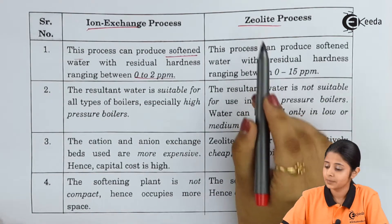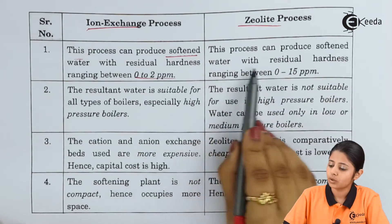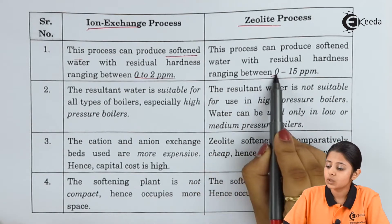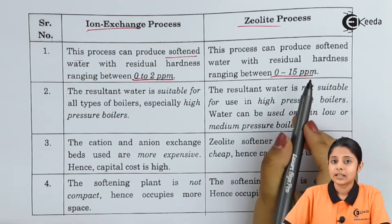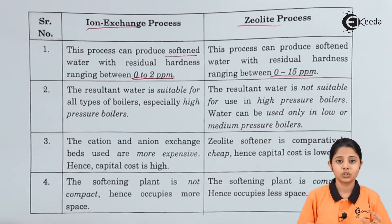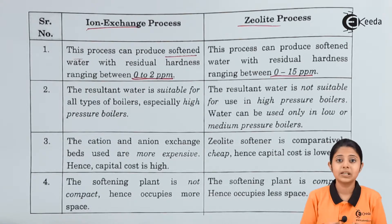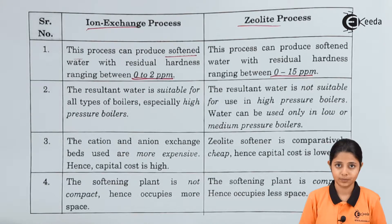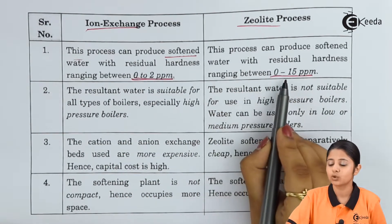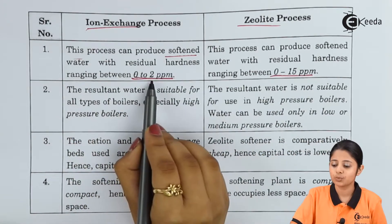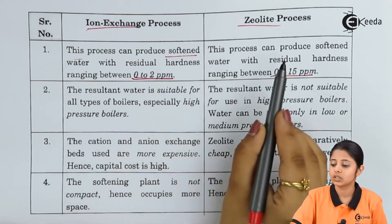For the zeolite process, the softened water produced has a residual hardness ranging between 0 to 15 ppm — meaning for every million parts of water there will be up to 15 parts of impurities. Comparing both: the ion exchange process gives 0 to 2 ppm, while the zeolite process gives 0 to 15 ppm. Therefore, the ion exchange process produces better quality water compared to the zeolite process.